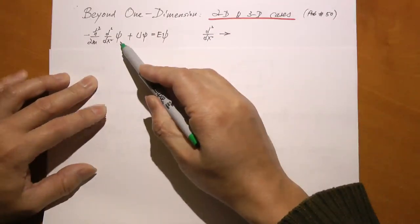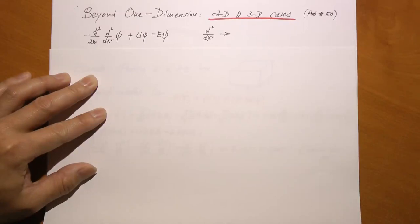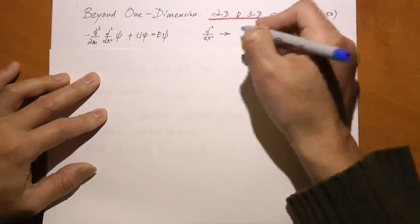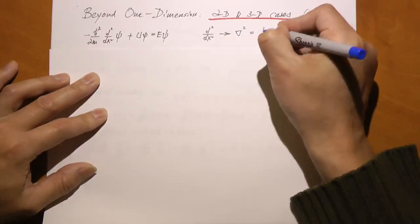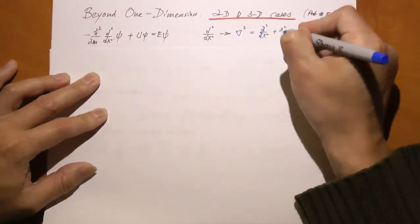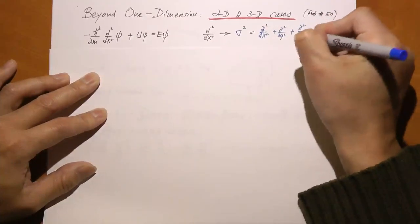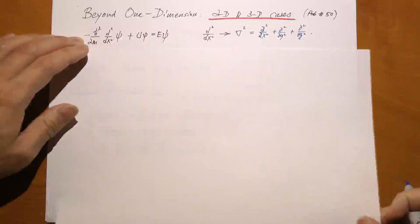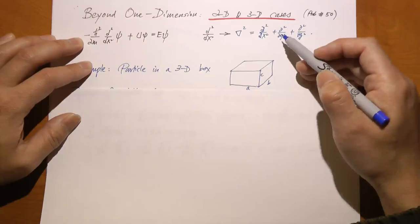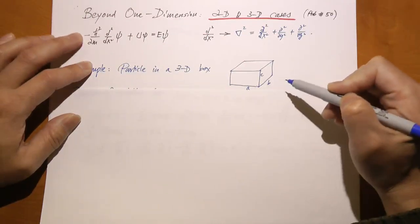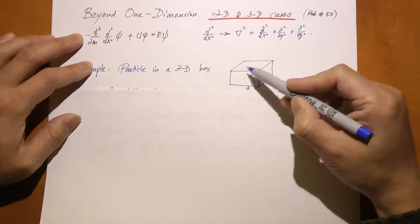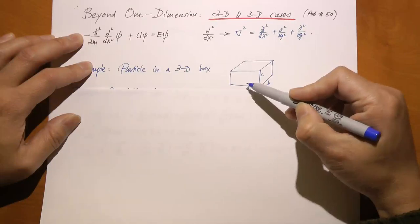Here is Schrödinger's equation in one dimension, and if you go beyond one dimension, this second derivative with respect to x now becomes gradient squared, which is the sum of the three second derivatives. This is the Laplace operator. So let's apply the three-dimensional Schrödinger's equation to solve this sample problem. This is one of the easiest ones to solve, but even with the easiest one, you can see some new physics. I have a three-dimensional box in which I trap a particle.